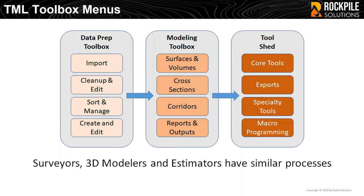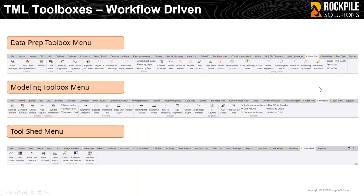With these three toolboxes, this is how we've structured the menu. When you get into the software you'll find three macro menus: the Data Prep toolbox menu, the Modeling toolbox menu, and the Tool Shed menu. The commands are all laid out in a logical order, in groups. For instance, in the Data Prep toolbox you'll find the layers group for managing or re-layering information.